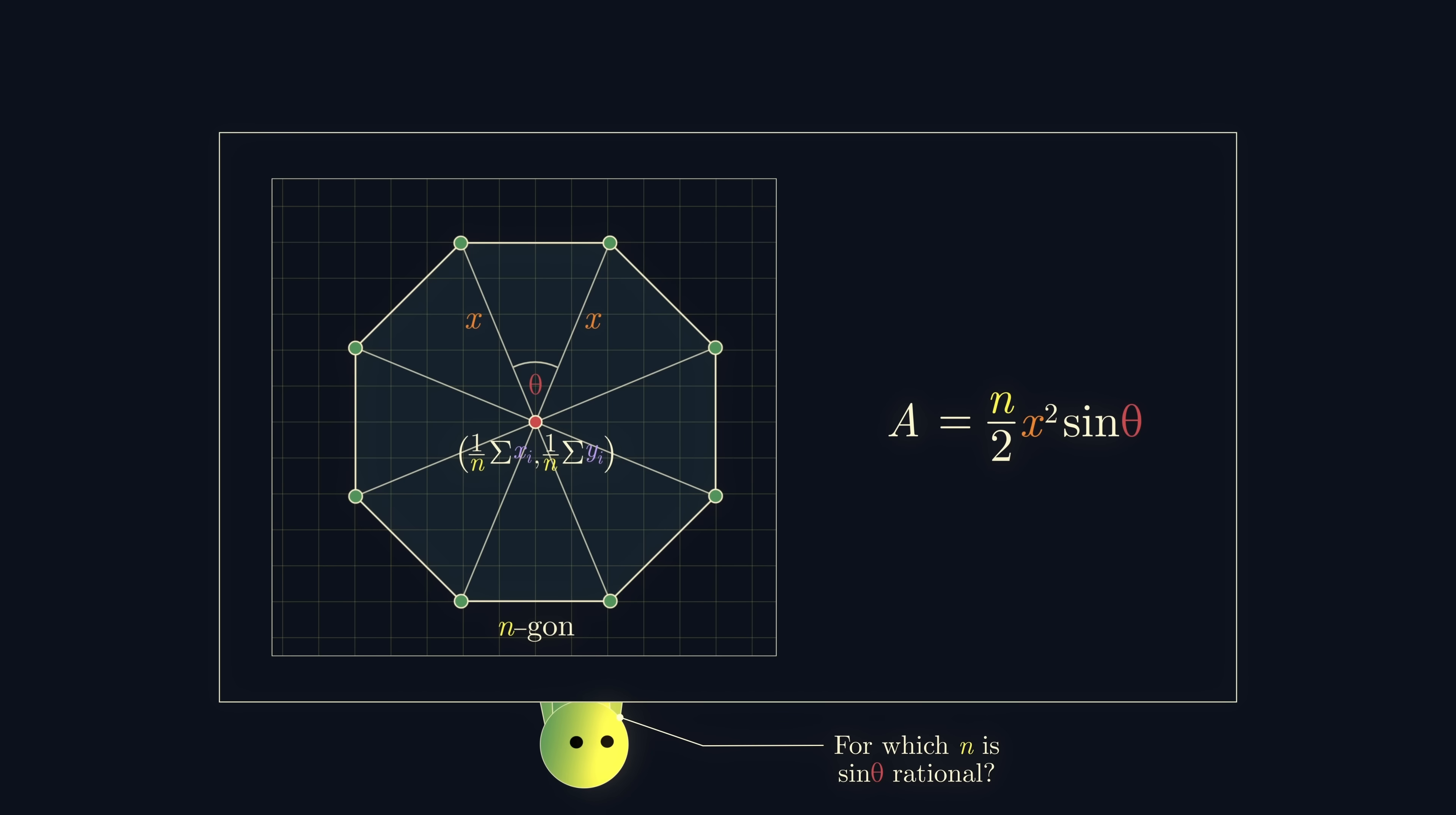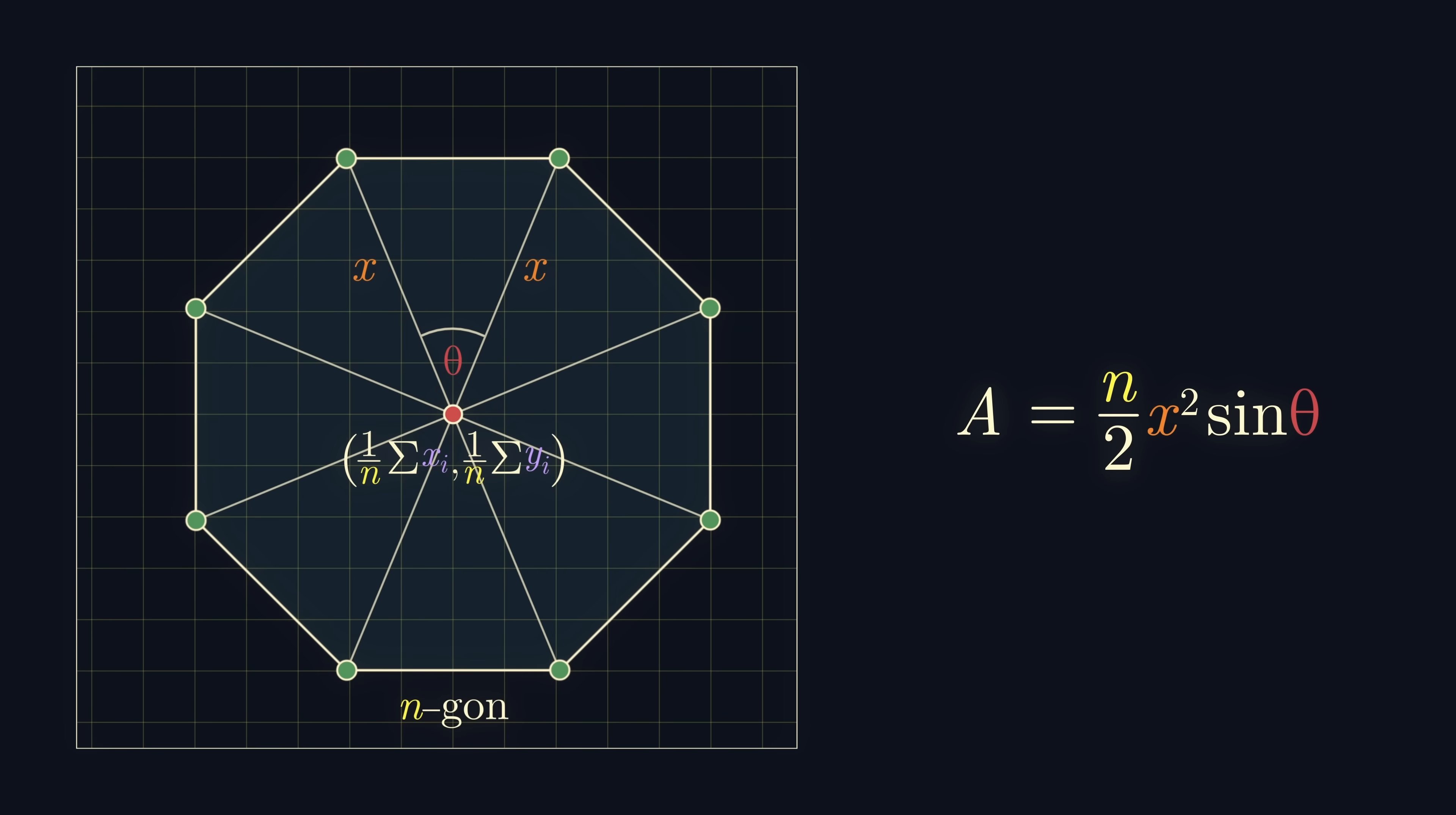If sin theta was irrational, this would contradict our observation from before, that the area of our n-gon must be rational. So, being the optimists we are, why don't we assume that sin theta is rational? But what actually is theta? We divided the polygon into n identical isosceles triangles, so theta is just 360 divided by n.